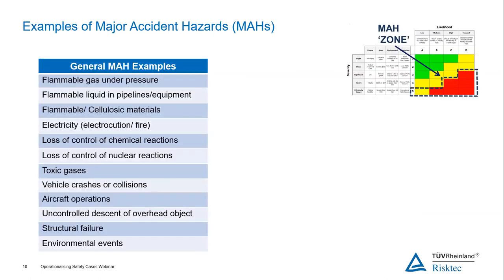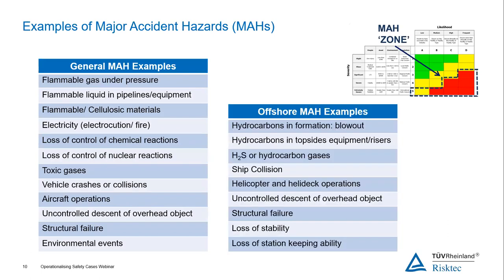Some examples of major accident hazards: there are general ones such as flammable liquids, hydrocarbons or other materials, toxic gases, vehicle crashes, environmental events, etc. Offshore, obviously some of the same things but you might also have things like ship collision or other specific hazards. This is the kind of magnitude of event that we're talking about here, which would come under the classification of major accident hazards.